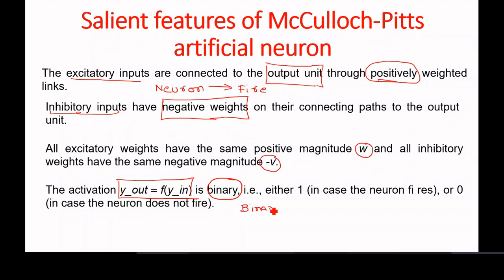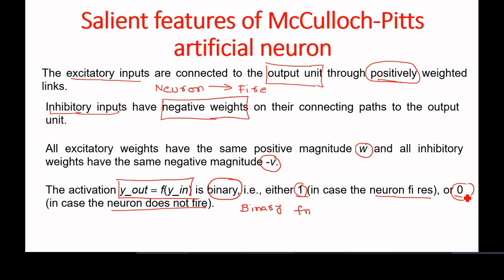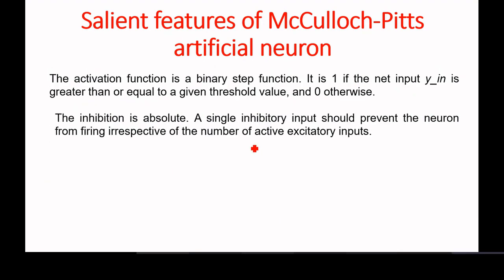The activation function is a binary function, meaning the output is either 1 if the neuron fires, or 0 if the neuron doesn't fire. That is why we call the activation function a binary function — the output has only two values: either 1 or 0. It is specifically a binary step function.